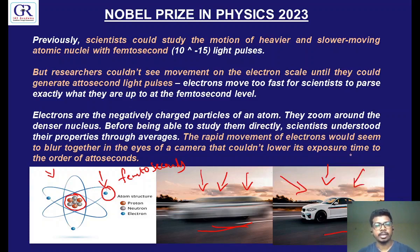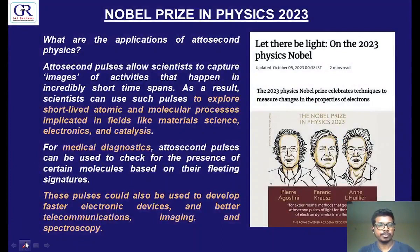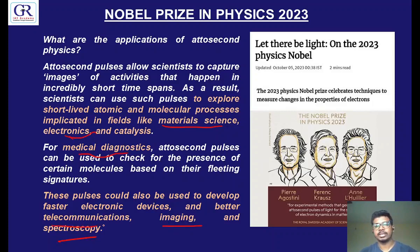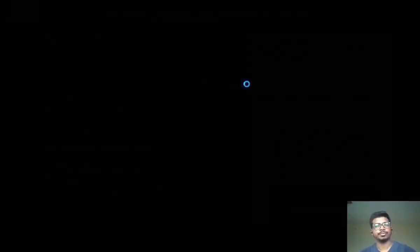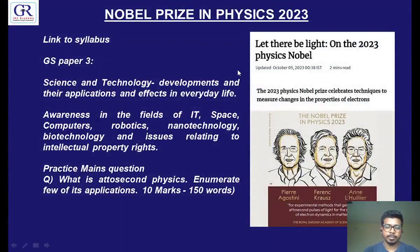All the electron movements are on the scale of attoseconds. Applications of attoseconds are seen in many places like material science, electronics, medical diagnostics, telecommunications, and spectroscopy. There are many applications of attoseconds. Now we have a good understanding of how electron dynamics can be studied. All these Nobel Prizes in medicine, physics, and chemistry directly relate to the syllabus of GS3 of UPSC. Here is a sample question — just try to answer it.